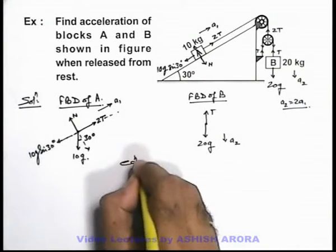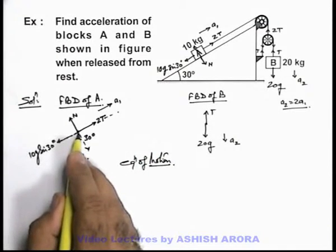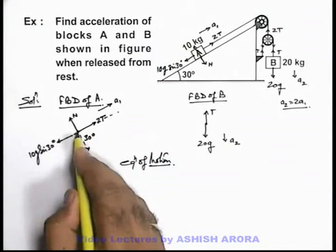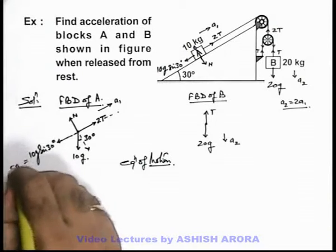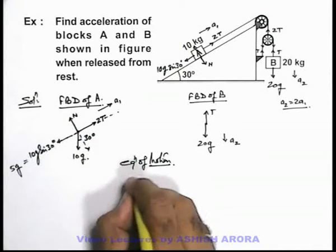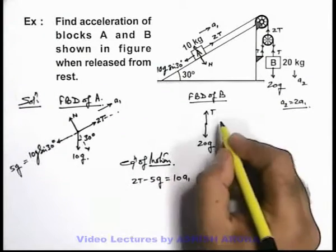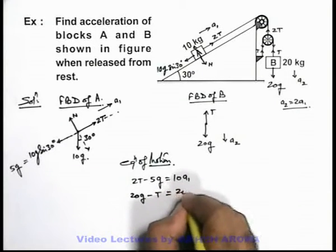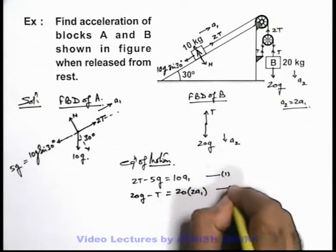Writing the equation of motion for block A: the external force 2T acts in the upward direction, and in the downward direction it is 10g sin 30 degrees, which equals 5g. So the equation of motion is: 2T − 5g = 10a1. Similarly for block B, writing the equation of motion in the downward direction: 20g − T = 20 × a2, which is 2a1. This is equation 1 and equation 2.